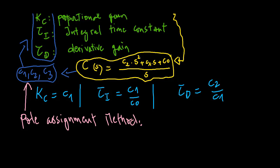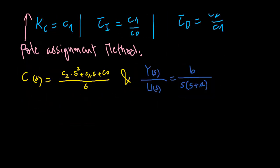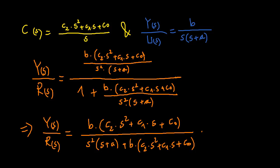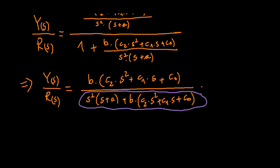Closed-loop transfer function, with the PID controller and the dynamic transfer function model, is shown here. Note that the closed-loop polynomial, which is the denominator of the transfer function above, is of a third order.